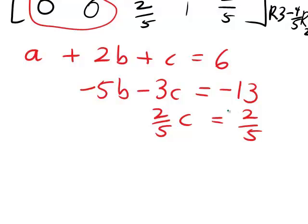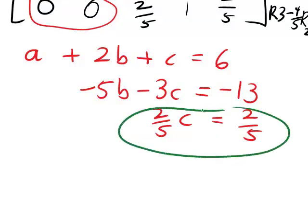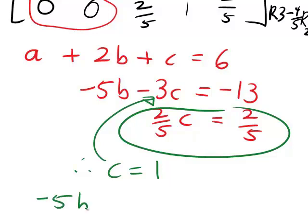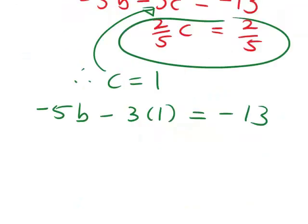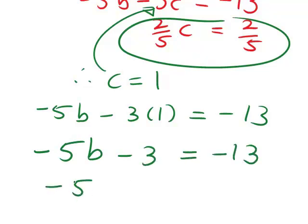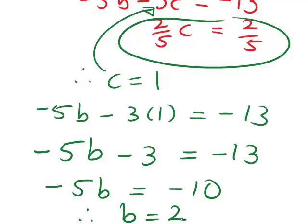From the third equation, two fifths times C equals two fifths, which implies C equals one. We then back-substitute C equals one into the second equation to get negative five B minus three times one equals negative thirteen. So negative five B minus three equals negative thirteen. Adding three to both sides gives negative five B equals negative ten, and hence B equals two.